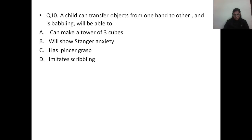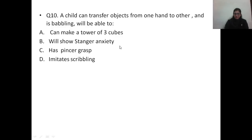Question number ten: a child can transfer objects from one hand to another and is babbling. What will he next be able to do? The correct answer is: show stranger anxiety.